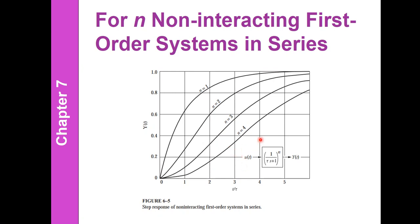As we add more tanks to the system — two tanks, three tanks, four tanks — the response becomes more sluggish and the response curve takes on more of an S-shape. This is characteristic of non-interacting first-order systems in series.